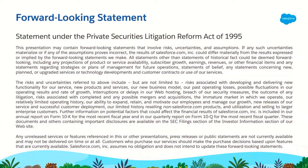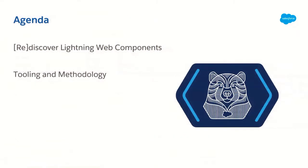Before I do so, I have to give you the formal safe harbor statement. You probably had this already a hundred times by now, but we are a publicly traded company, so please make your purchasing decisions based on what is currently available in the product. I will talk about some beta features here, so please take that into consideration. Now, my session is going to be divided into two parts. In the first part, I'm going to introduce or reintroduce Lightning Web Components, and in the second part, I'll be talking about tooling and methodology. This is going to get way more technical.